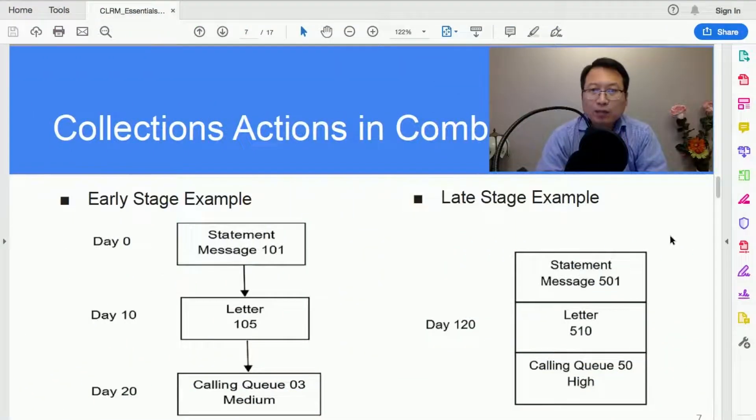On the right-hand side, we have a late stage example. Let's say it's day 120, so it's already 120 days past due. The account is entering cycle 5, so we'll print a statement message.